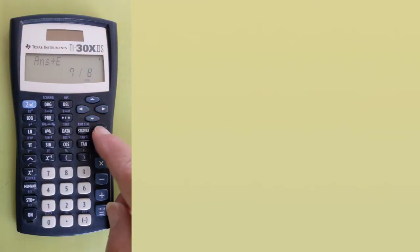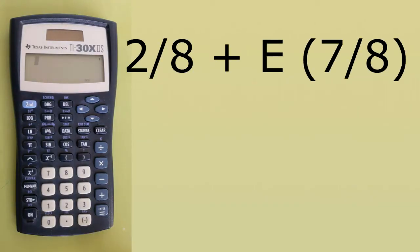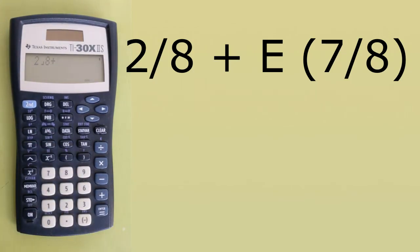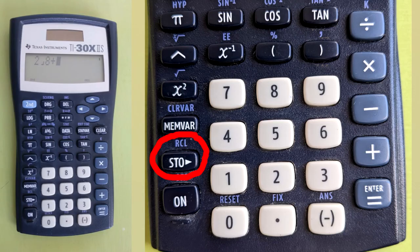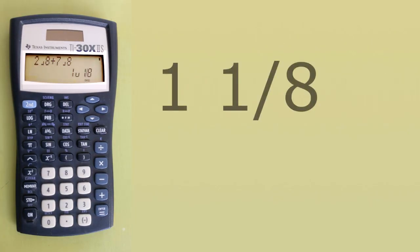I'll clear the screen by pressing the clear button. Let's use the fraction stored in E. I will take the fraction 2 eighths and add the number stored in E, which was 7 eighths. Enter a 2, press the fraction button, enter an 8, enter a plus sign. To recall a stored number, press the blue second button, then the STO button — written above it in blue is RCL, which stands for recall. Use the right arrow button to go to E. There is our fraction 7 eighths. Press the enter button. Now we have 2 eighths plus 7 eighths. Press the enter button to get the answer. The answer is 1 and 1 eighth.